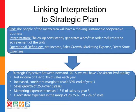This interpretation was then converted to a strategic objective tied to a particular time period. Between now and 2015, consistent profitability: net income of 1% to 3% of sales each year, increased consistent margin to reach 39% end of year 3, sales growth of 25% over 3 years, marketing expense increases 1% to 3% of sales by year 3, and direct store expenses in the range of 28% to 29.75% of sales. As you can see, what's been done is that interpretation becomes the top line of the strategic plan.